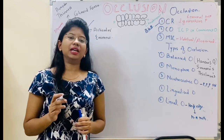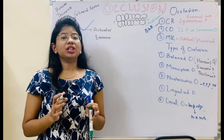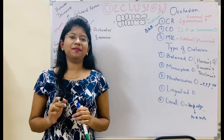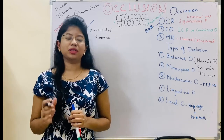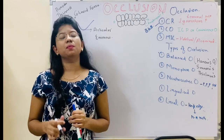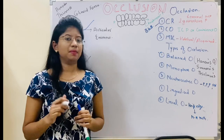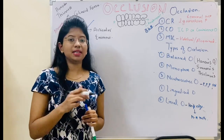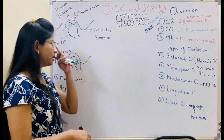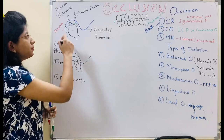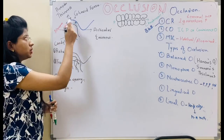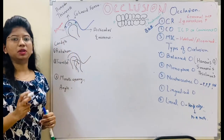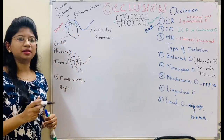Centric relation is a definition you all find very difficult because GPT-5 is the most acceptable definition about centric relation. Before we see the definition, I would like to give a brief overview of the temporomandibular joint to understand it easily.